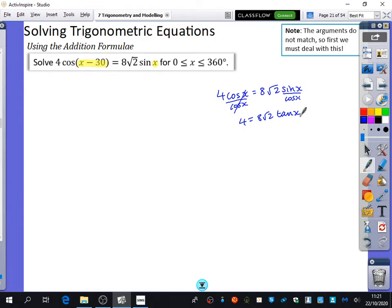I'm allowed to do this because the arguments here match, so I can make it become a tan x. But in this case, I couldn't use that technique because if I divided everything by cos(x - 30), this doesn't become tan of x or tan of x minus 30 because the arguments don't match each other. And so there's that hint at the top that this is going to be using the addition formula.